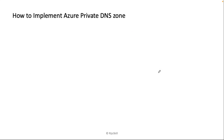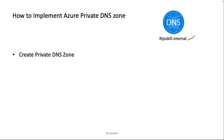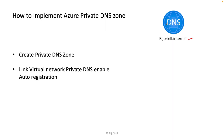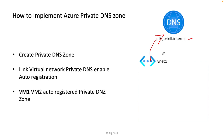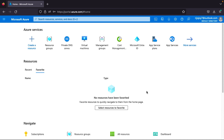For our lab, I plan to create one private DNS zone named something like 'privateDNS.in', link it with a virtual network with auto registration enabled, then create two virtual machines and verify that they are automatically registered in the private DNS zone.